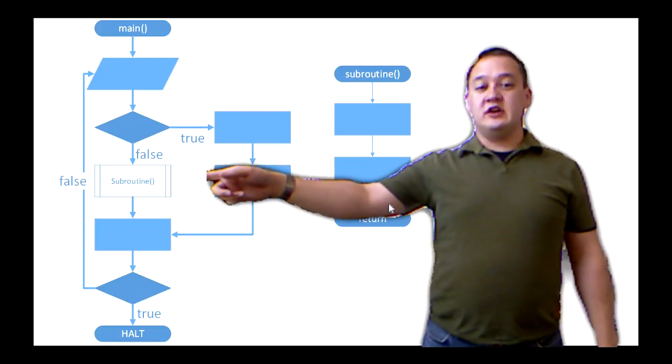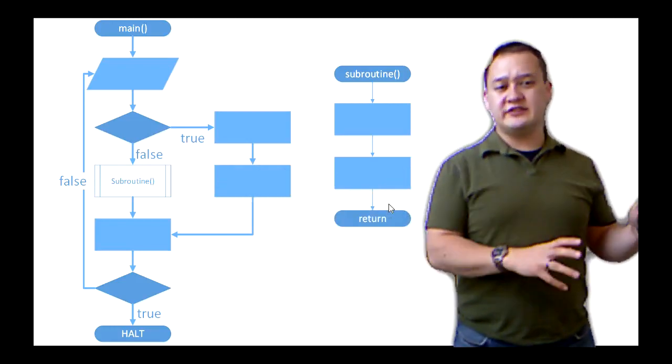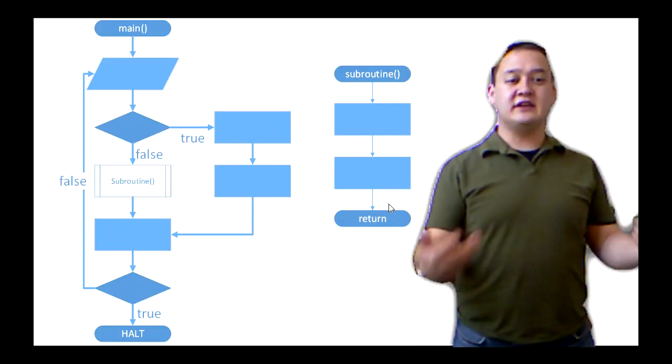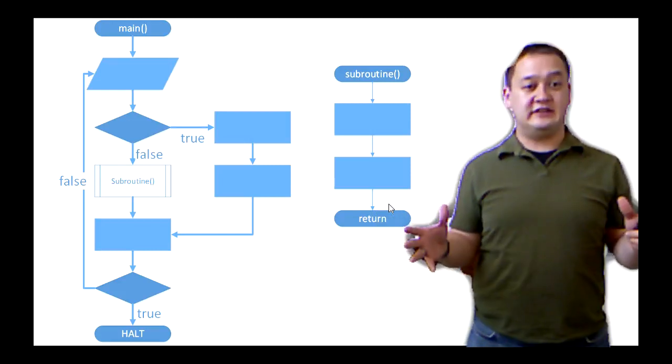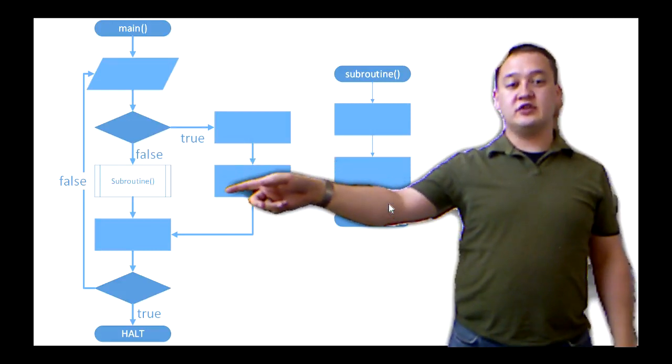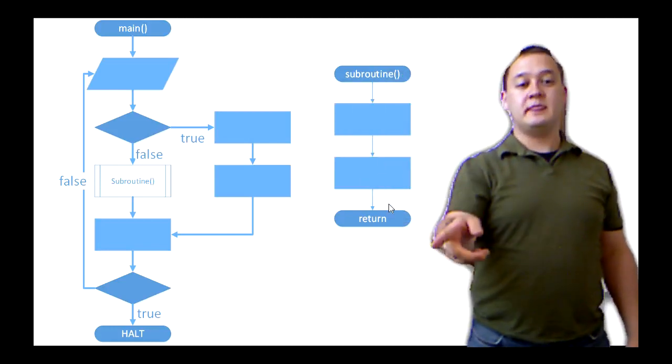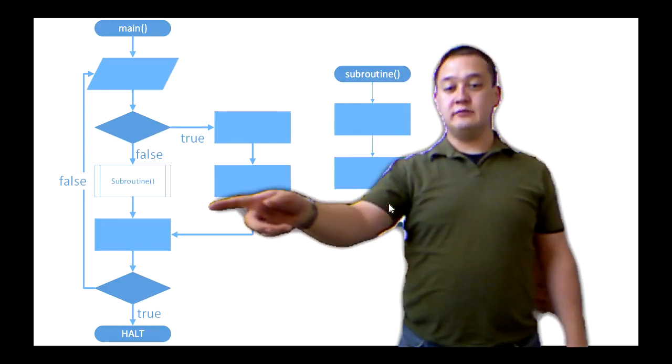What a subroutine call does is it says someone else already wrote this code, or I wrote this code somewhere else, and I want to use this again. So let's say we had a swap function, or a negate, or we had an addition, or some other subroutine that did some specialized task that we've already written. We could say I'm going to call the subroutine. You're going to perform an operation on my data, and you're going to run the subroutine. The subroutine is going to return at the end, and then move on to the next process.